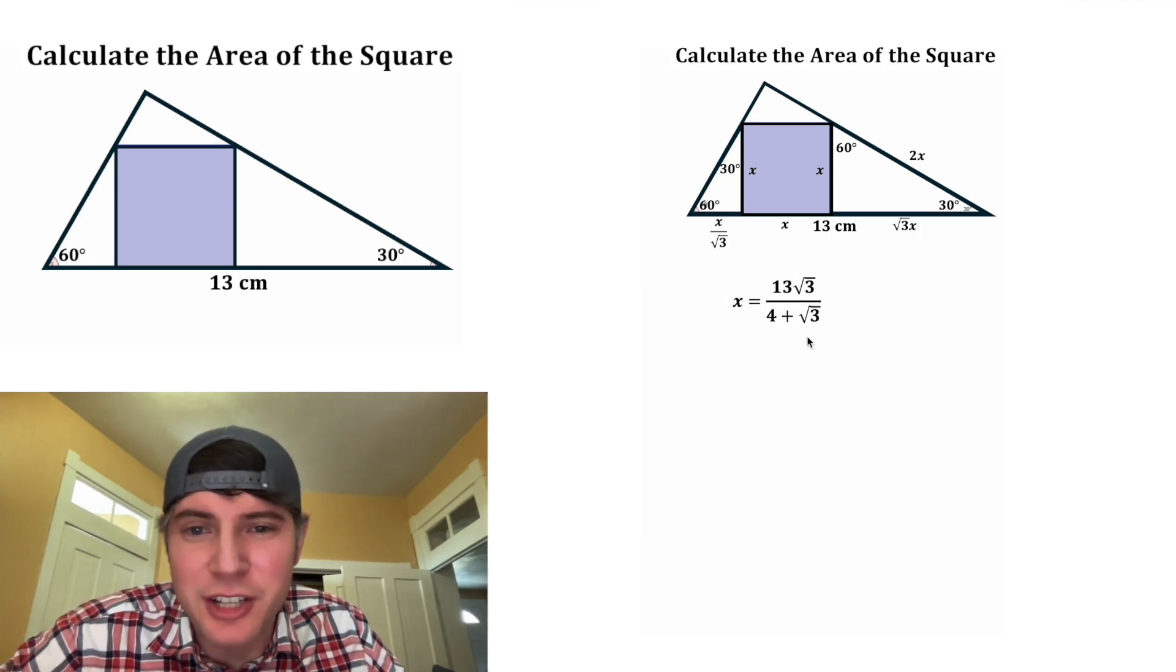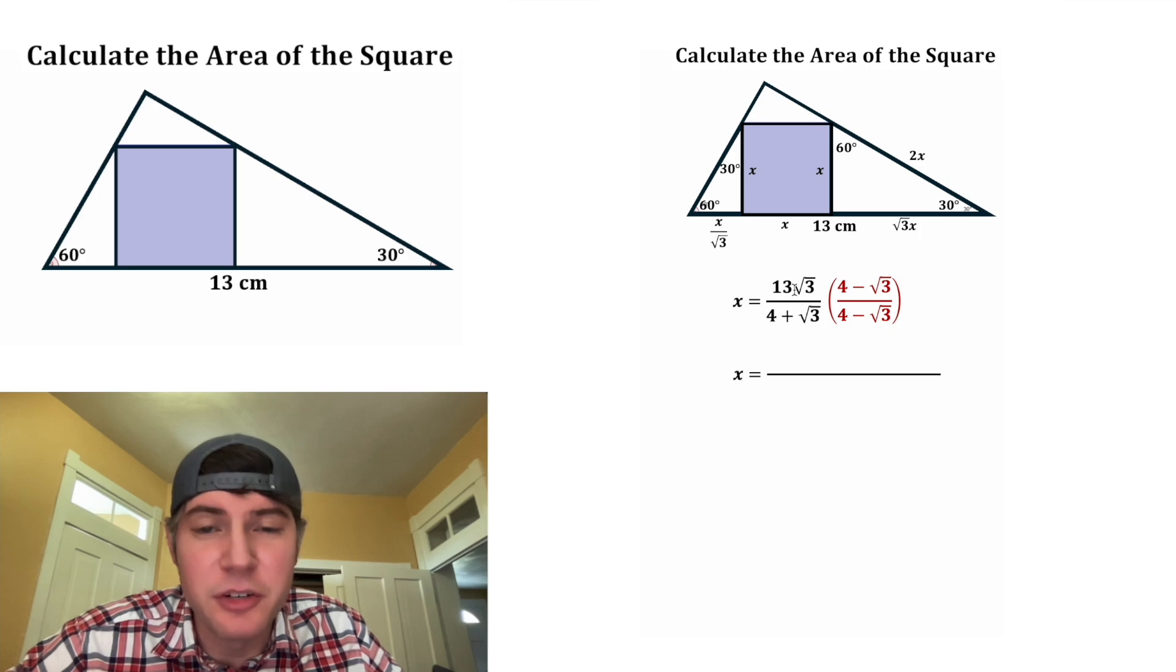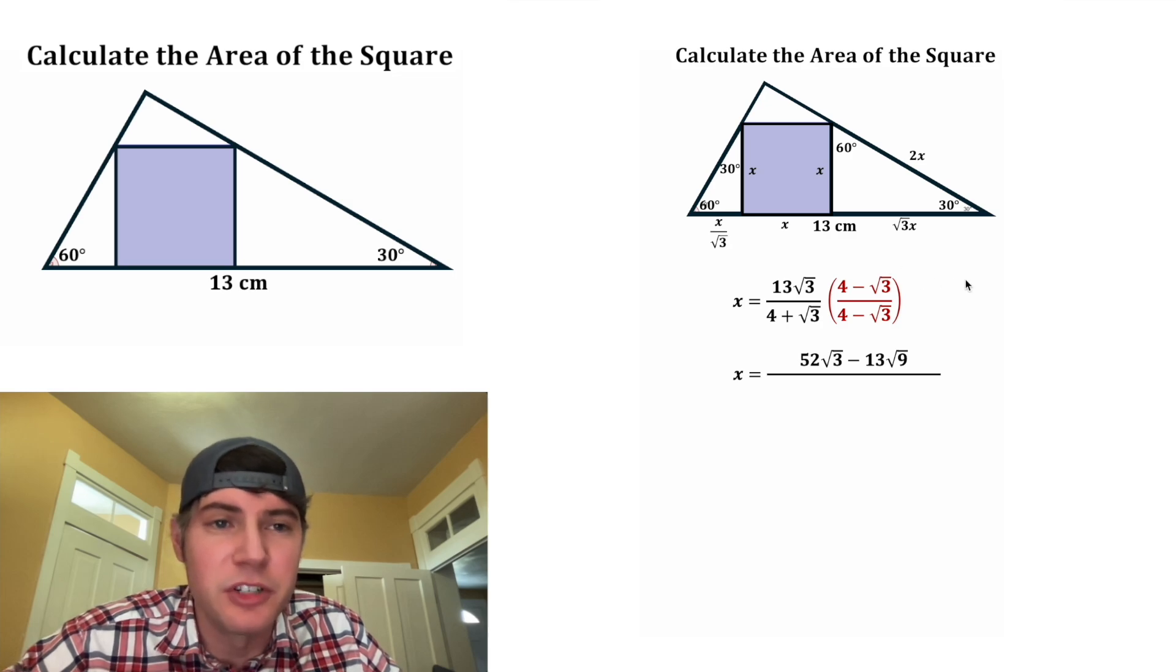But next, we should rationalize the denominator. We're going to multiply top and bottom by the conjugate of the denominator, which would be four minus root three. On top, 13 root three times four is 52 root three. And then we're going to subtract 13 times root three times root three, which is 13 root nine.